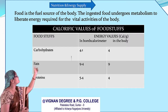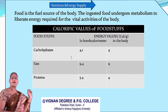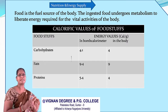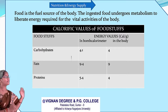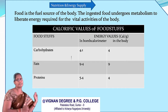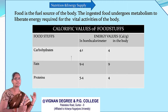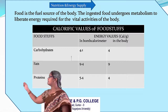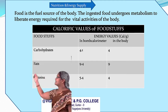Coming to the values of carbohydrates — 4.1 in the calorimeter and 4 in the body — and fats — 9.4 in the calorimeter and 9 in the body. The calorific values of carbohydrates and fats are nearly the same in the body and in the bomb calorimeter because fats and carbohydrates are completely oxidized and liberate the same amount of energy.